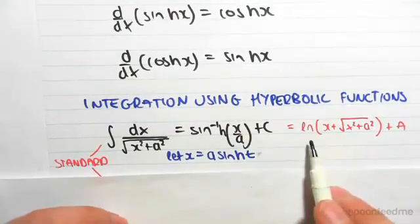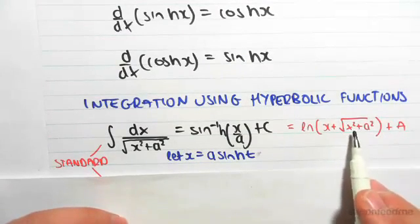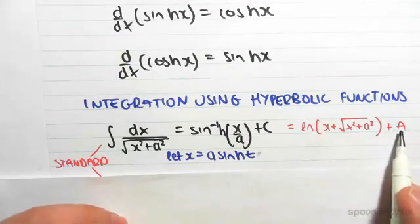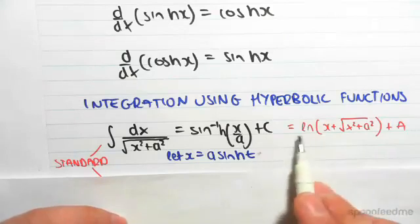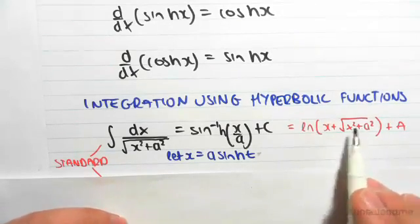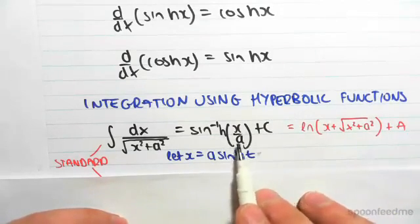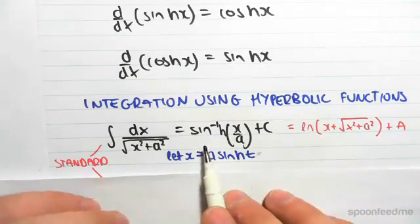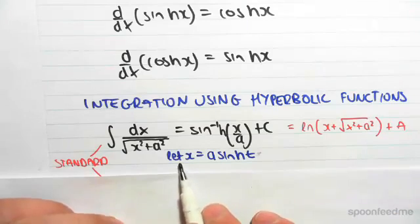Now this also equals ln x plus square root of x squared plus a squared plus a constant a. So these are actually equivalent. You get this answer when you use trig substitution. You get this answer when you use hyperbolic substitution. And for this case, you let the x...